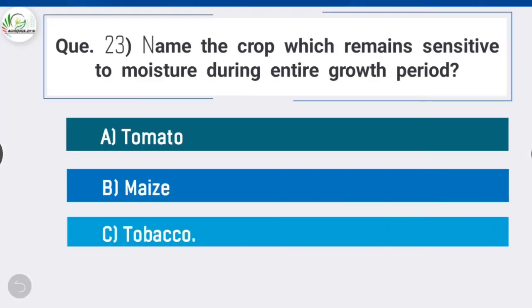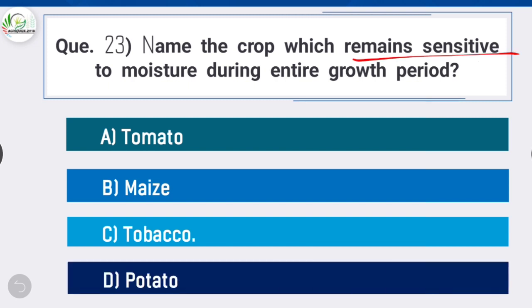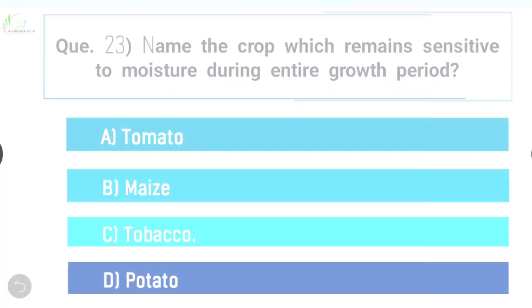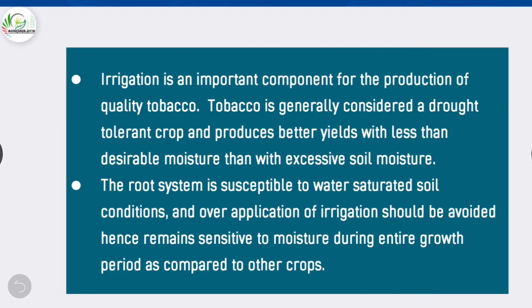Question 23: Name the crop which remains sensitive to moisture during the entire growth period. Option C is correct: tobacco. Irrigation is an important component of quality tobacco production. Tobacco is generally considered a drought-tolerant crop and produces better yields with less than desirable moisture rather than with excessive soil moisture. The root system is susceptible to water-saturated soil conditions, so over-application of irrigation should be avoided. Hence tobacco remains sensitive to moisture during the entire growth period.